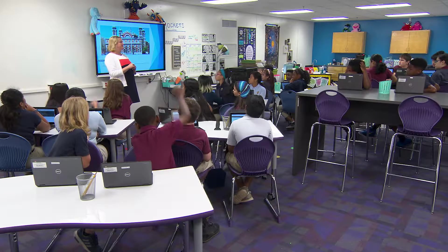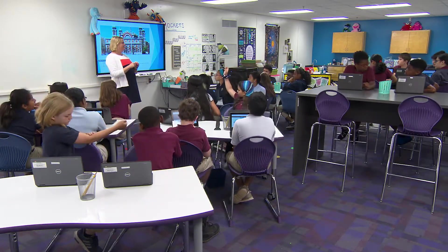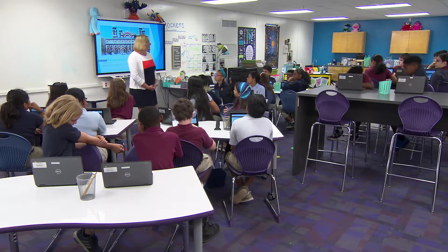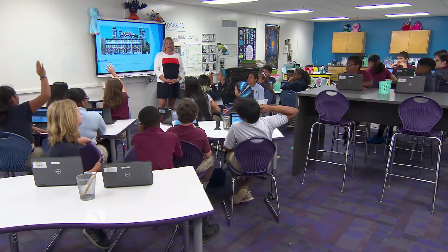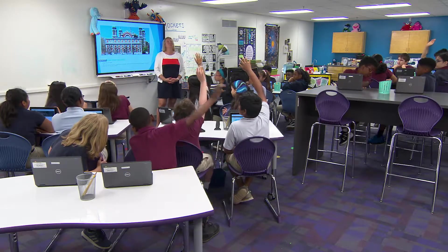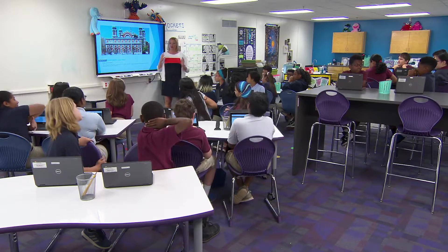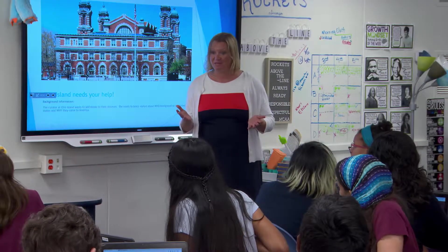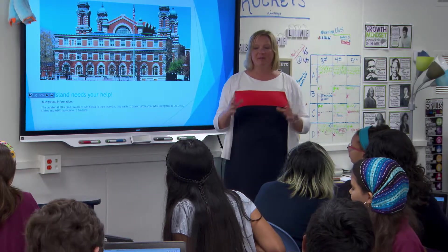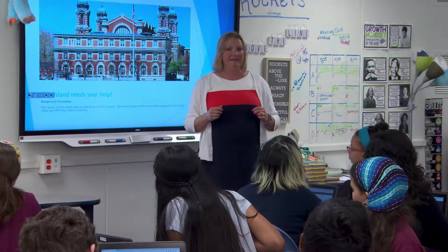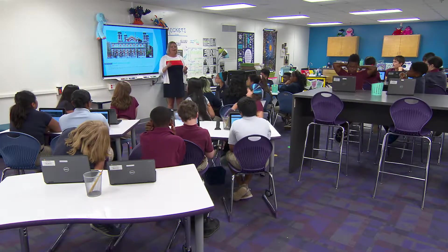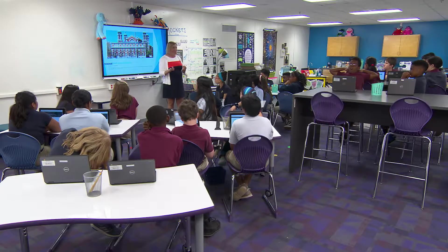Why is Ellis Island so important? Because that's where people immigrated to. They immigrated there from Italy, Germany, Russia, Sweden — from Europe. And I know that in your social studies class you've been learning about immigration. So I thought it would be neat if you guys created kiosks to teach about the different groups of people who came through Ellis Island and what their experience was. You're going to create a program that if somebody was at Ellis Island, they could click on it and learn about that group of people.